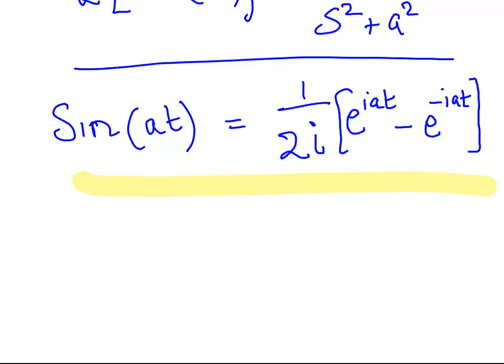Sine of at, we're going to find the Laplace transform of that, okay, sin of at. And what we're saying is that we can rewrite sin of at as 1 over 2i times this expression here, e to the iat minus e to the minus iat.